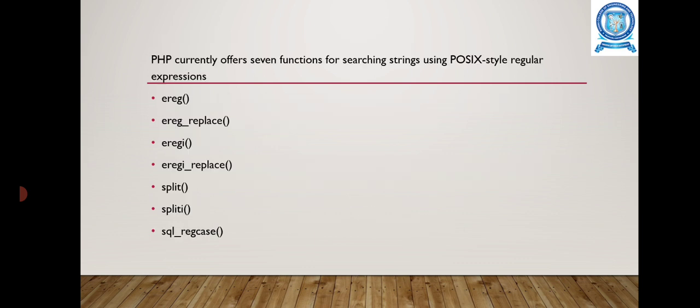PHP offers seven functions for searching strings using POSIX-style regular expressions. First one is EREG. The EREG function searches a string specified by the particular string for a string specified by the pattern, returning true if the pattern is found, otherwise return false. Next one is E-replace. The E-replace function searches for a string specified by pattern and it replaces pattern with replacement if it is found.